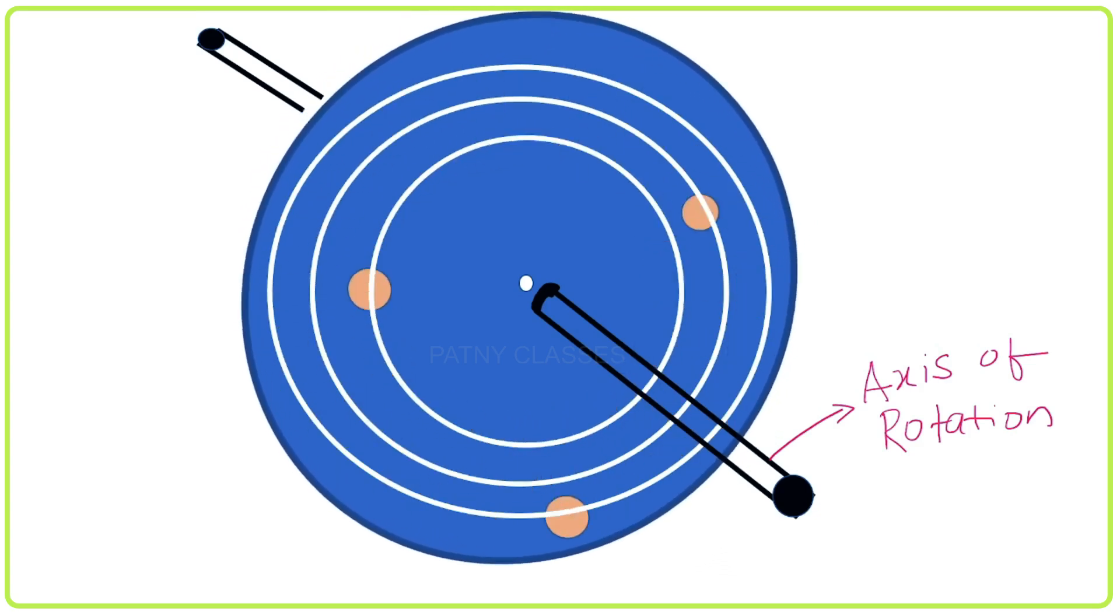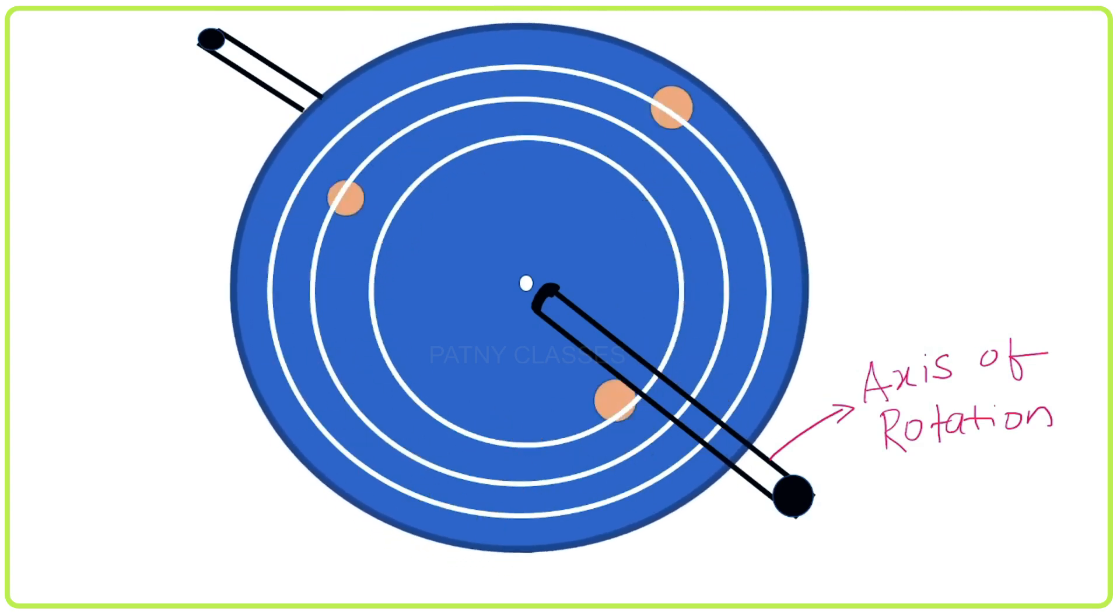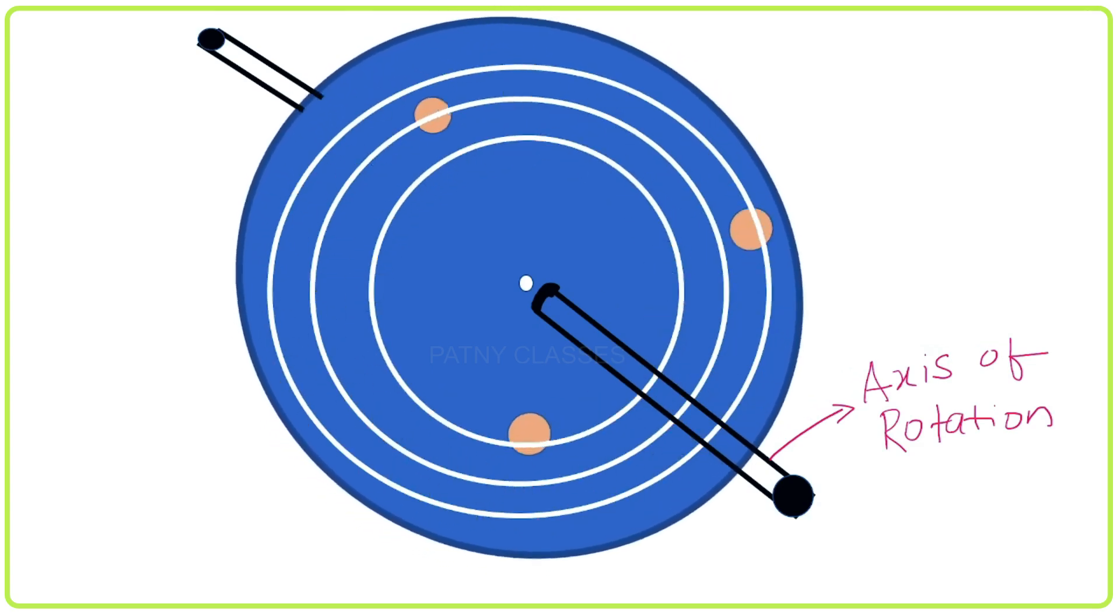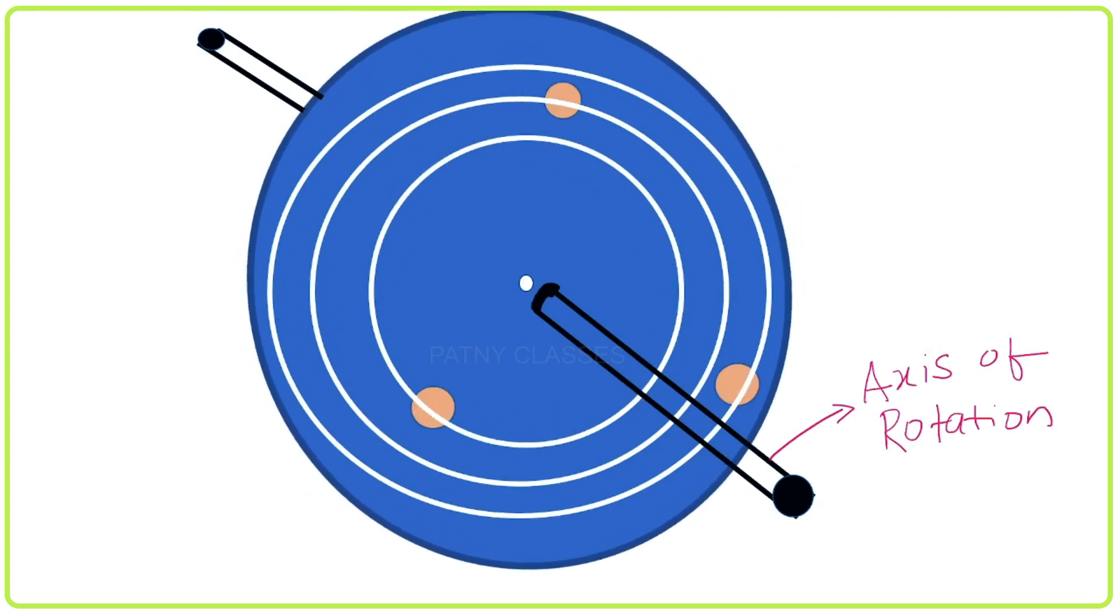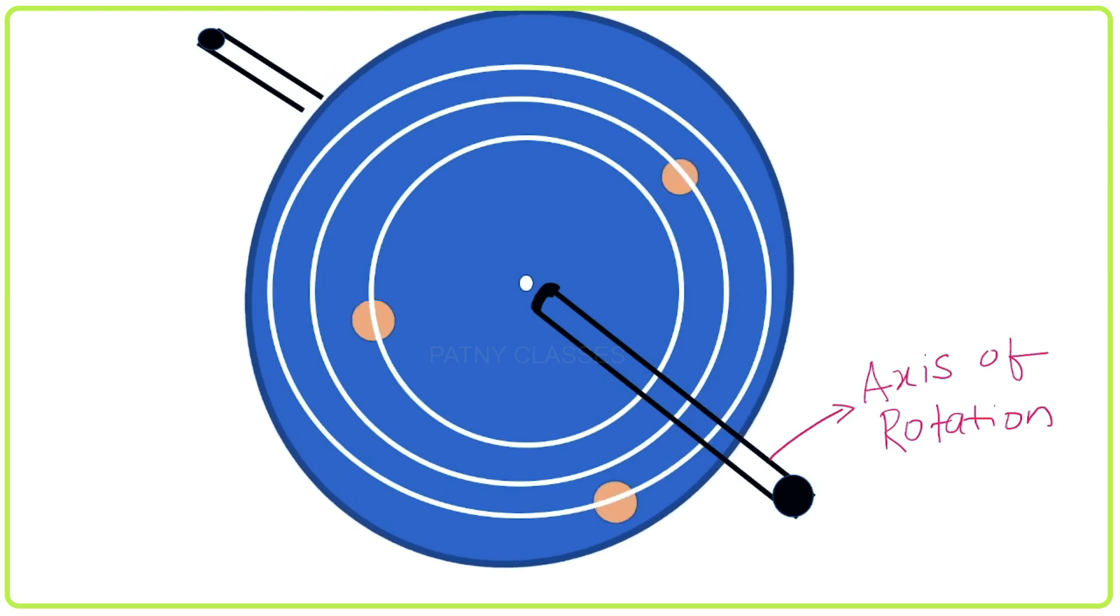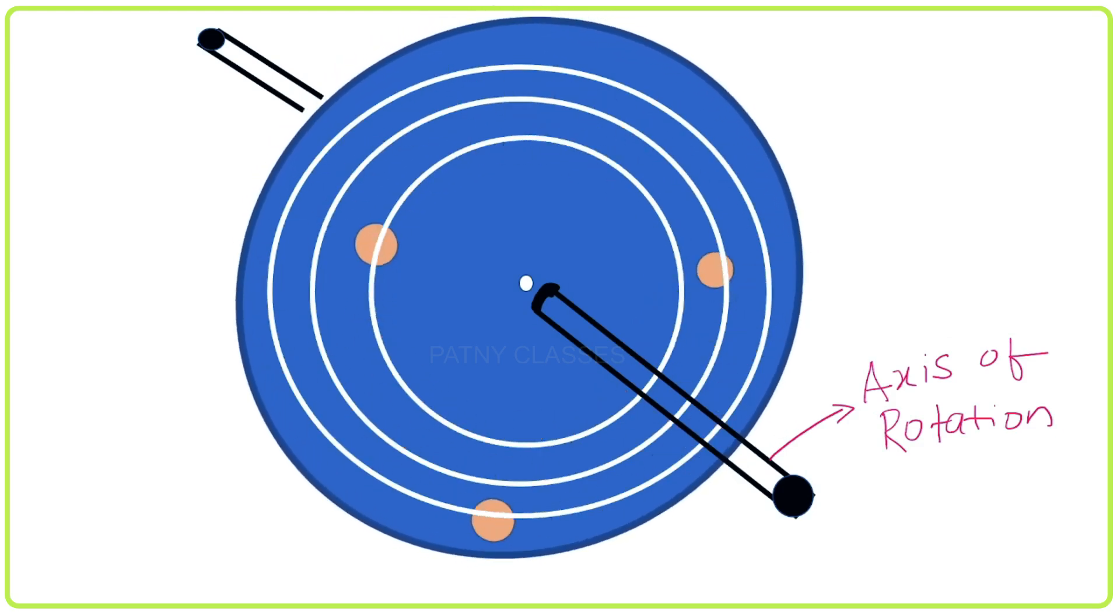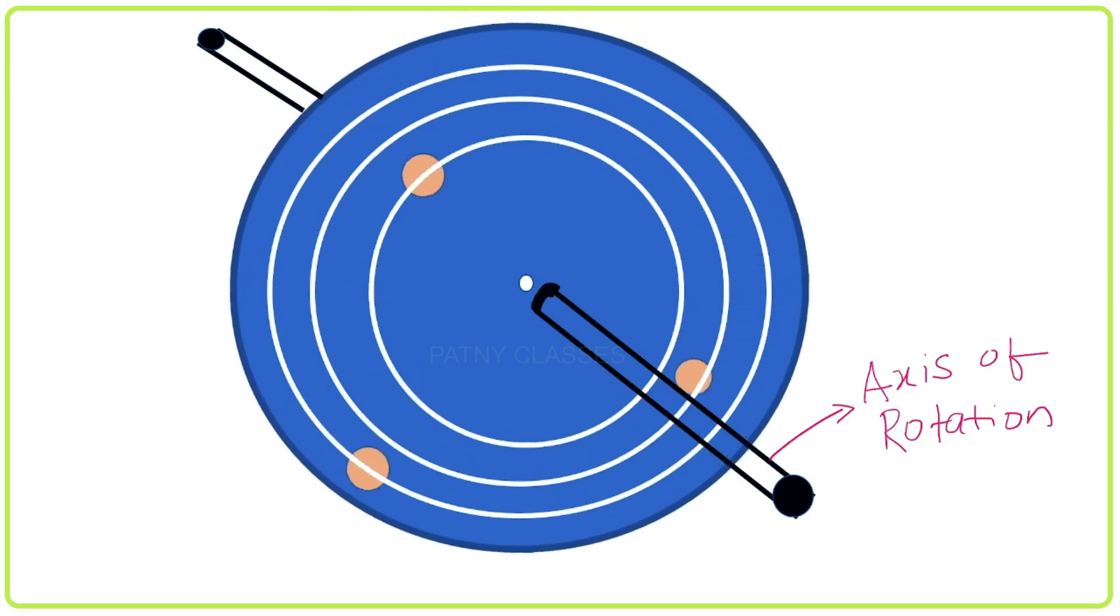Every particle present on the rotating body performs circular motion with concentric circles with different radii. They move with the same angular speed but the linear speeds are different.